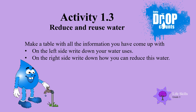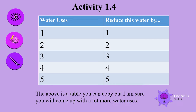Now make a table with all the information you have come up with. On the left side, write down your water uses. On the right side, write down how you can reduce this water. Here is a table that you can use or copy, but I am sure you will come up with a lot more ideas — not just 1 to 5.